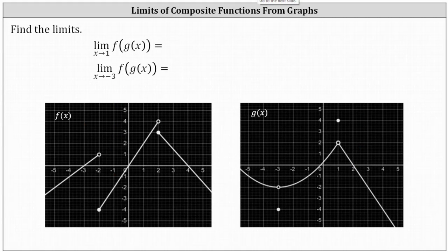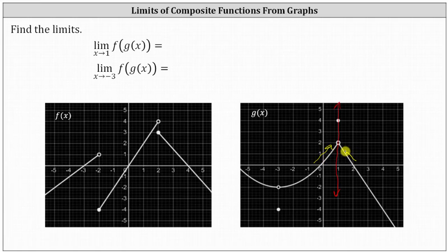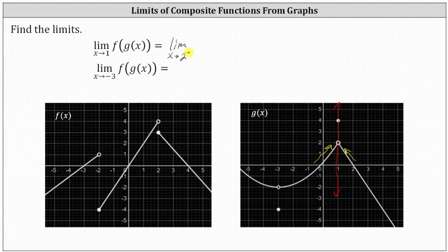Now two more examples, again with f(x) on the left and g(x) on the right. We begin with the limit as x approaches one of f(g(x)), so we first find the limit as x approaches one of the inner function g(x). As we approach from the left and right, we approach the y-value of positive two. Since f(x) is discontinuous at x equals two, it's important to note we are approaching from below — from y values less than two — so we write a one-sided limit as x approaches two from the left of f(x).